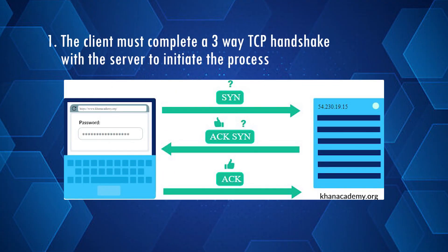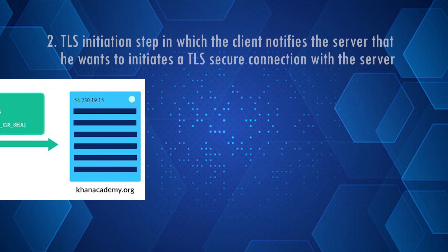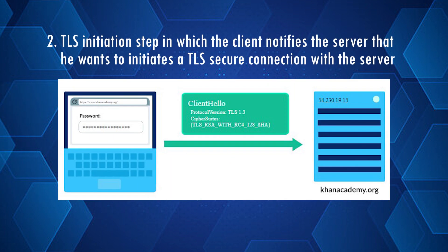Let's discuss the TLS handshake step-by-step process to secure communication between server and client. I'll try to simplify it at a high level, but it's important to know. In the first step, the client must complete a three-way TCP handshake with the server to initiate the process — remember, TLS is built on TCP/IP. So the client sends a SYN, the server replies with SYN-ACK, and then the client replies with ACK.